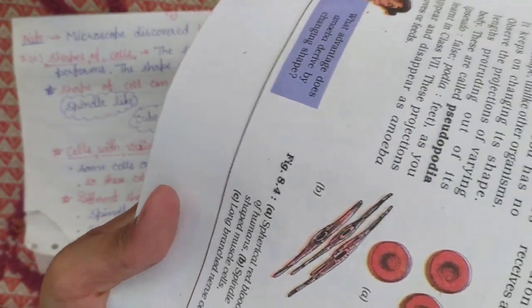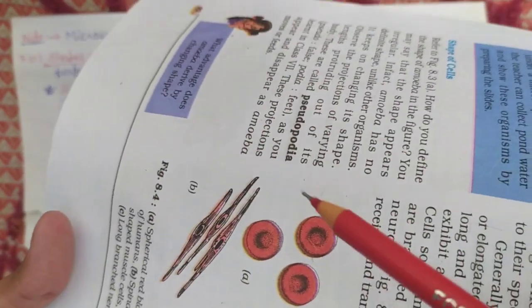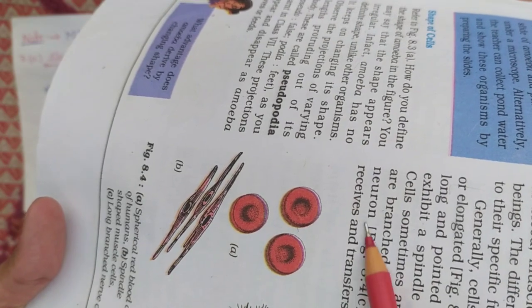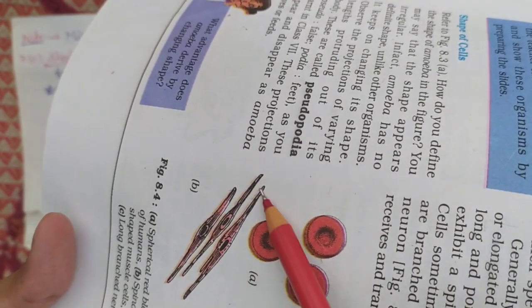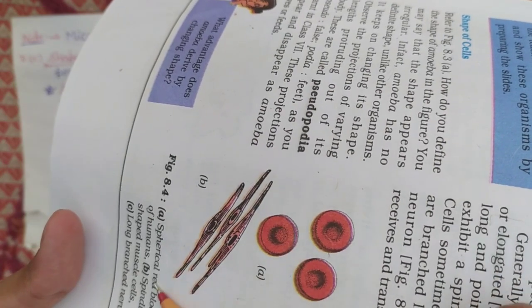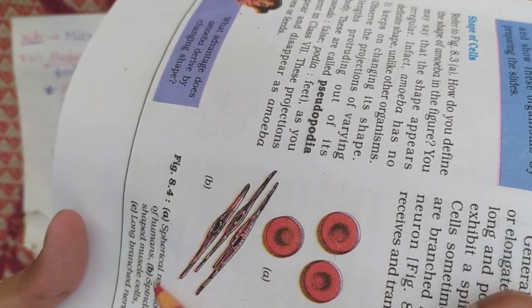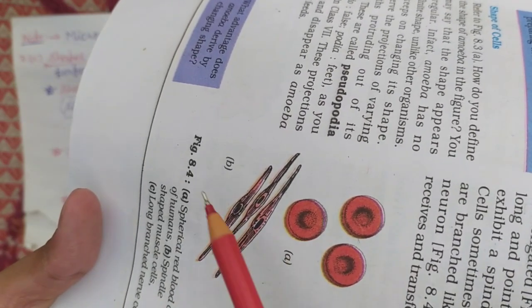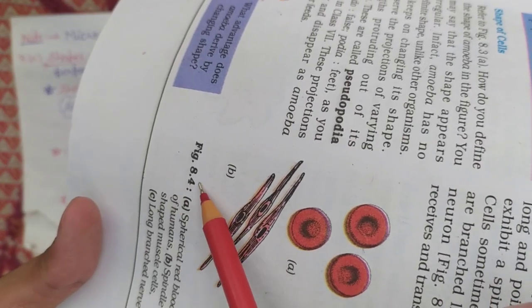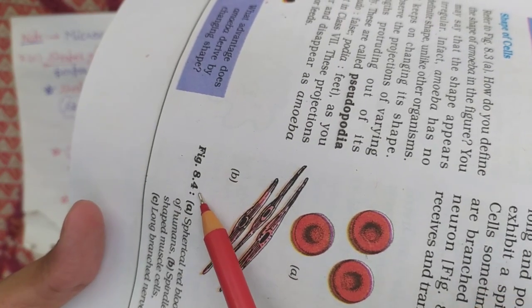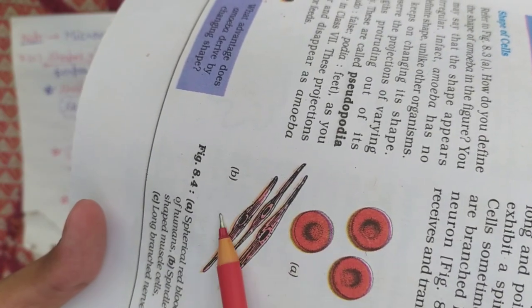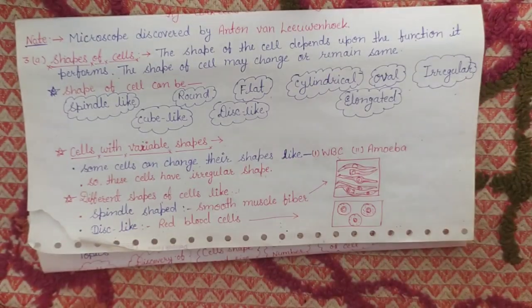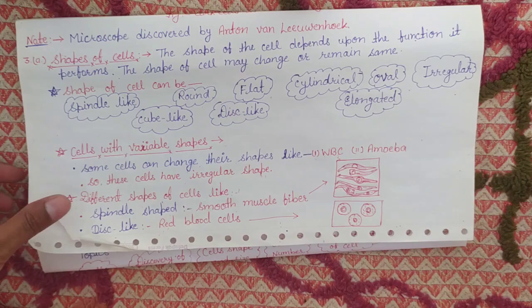You can see in figure 8.4. RBC is disc-shaped, and the smooth muscle fiber is spindle-shaped. You may see from here also — you can make the figure from your book, figure 8.4. These two figures you have to make in front of their respective topics. This one is understood properly.